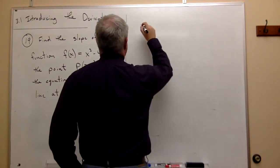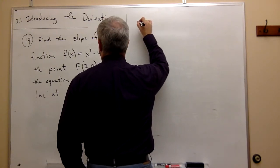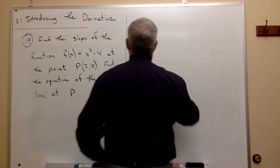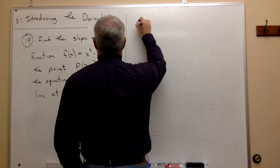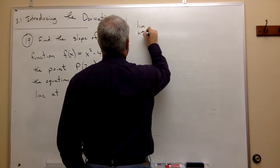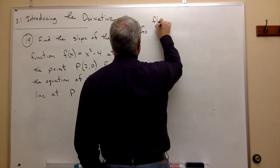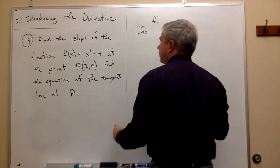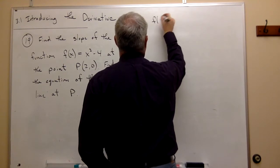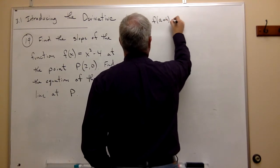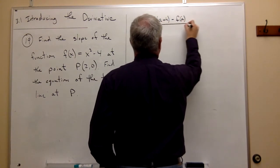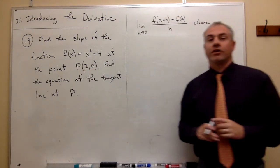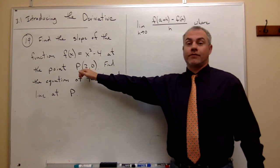To find the derivative at a point — in other words, if I want to find the slope of this function at the value x = 2 — then I want to find the limit as h goes to 0 of [f(a+h) - f(a)] / h, where a is the x-value that I'm specifically looking for. In this case, the x-value is 2.